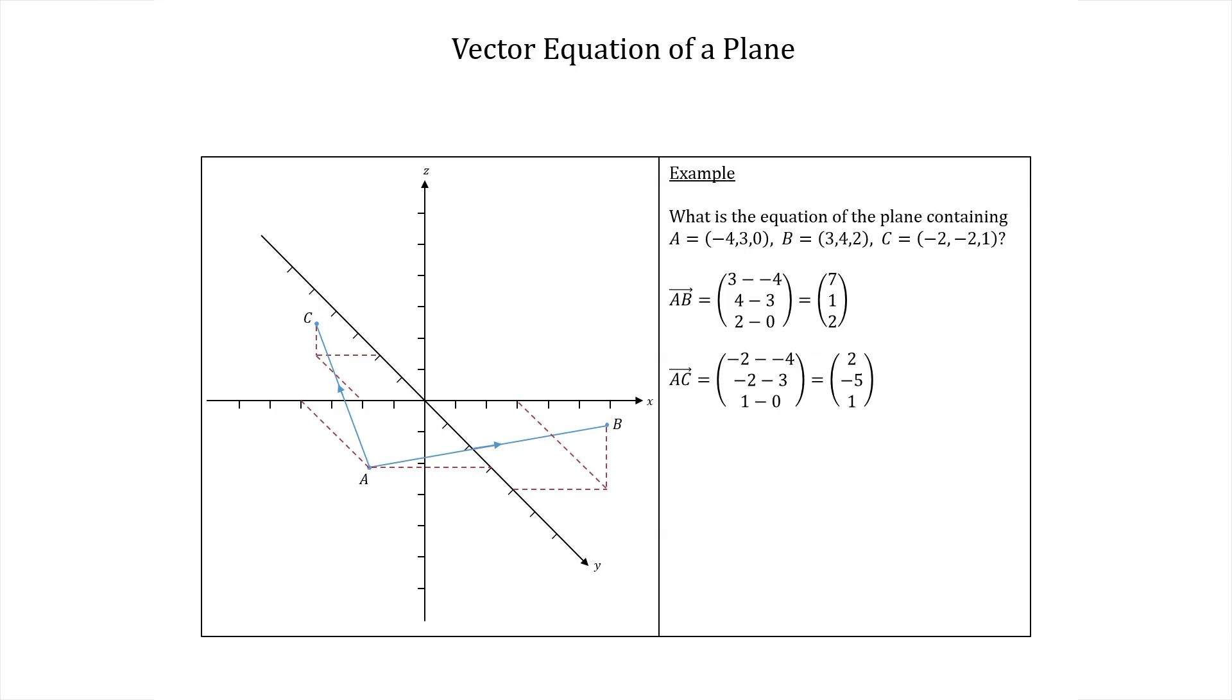So we have the vectors in our plane. Let's take the cross product now to get a normal vector. We won't go through the cross product in detail as this was covered in a previous video.